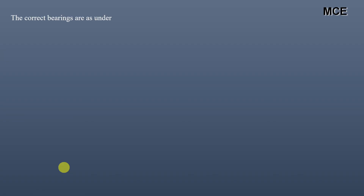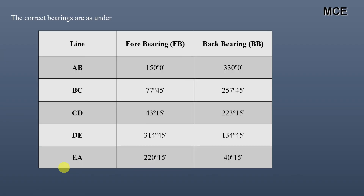You can see the final correct bearings of these lines. Line AB: fore bearing 150°00', back bearing 330°00'. Line BC: fore bearing 77°45', back bearing 257°45'. Line CD: fore bearing 43°15'. Line DE: fore bearing 314°45', back bearing 134°45'. Finally, line EA: fore bearing 220°15', back bearing 40°15'.